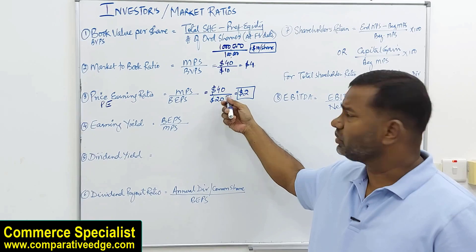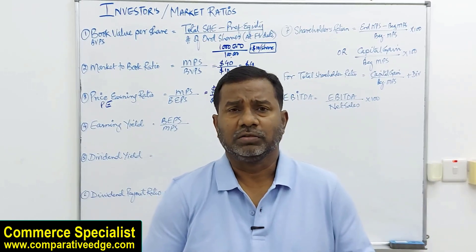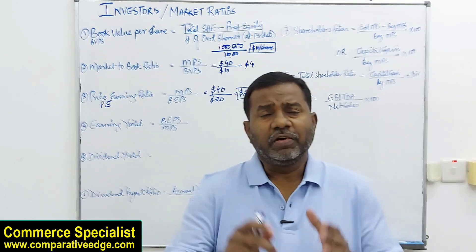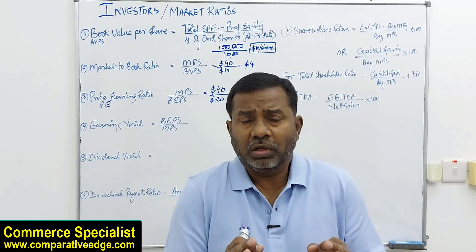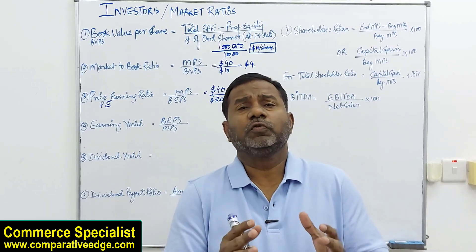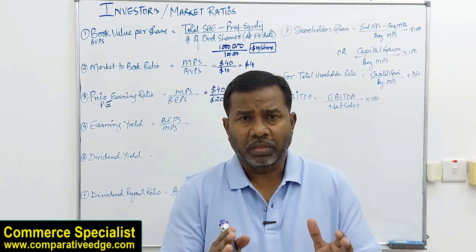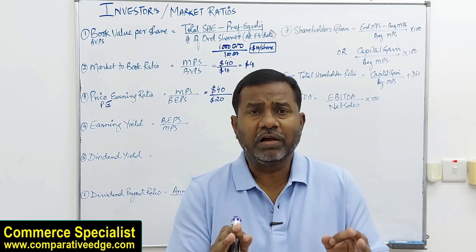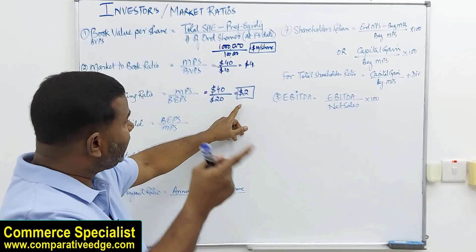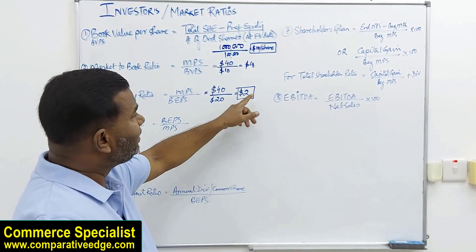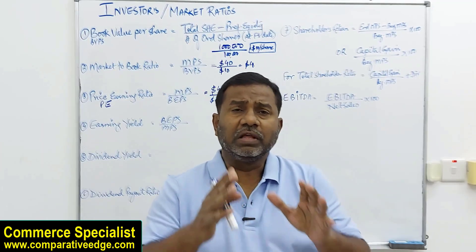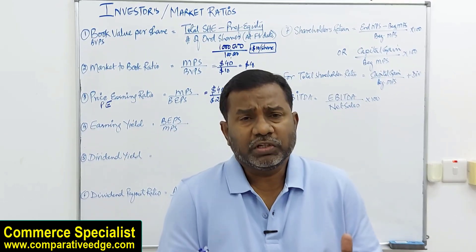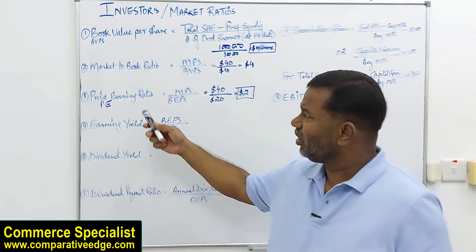Investors consider the PE ratio as an indication of what the market considers to be the firm's future earning power. Any company in a very high earning stage will have a very high PE ratio. If you're comparing two companies and one has a PE ratio of 2 while another has 5 or 6, the company with the higher PE ratio is expected to achieve phenomenal growth and profits.